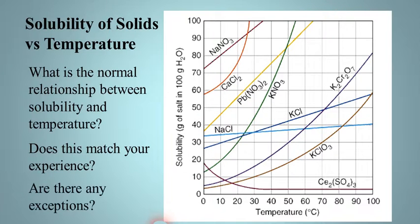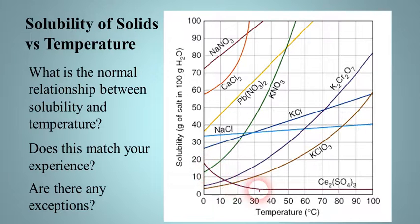There is one exception on the graph: cerium-3 sulfate actually starts with a high solubility and gets less soluble as you increase temperature. But that's a very rare situation — almost every other ionic compound gets more soluble as you raise the temperature. That's how solubility of solids changes with temperature.